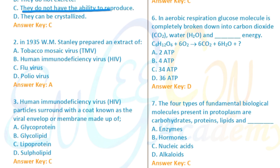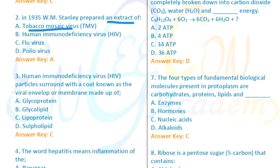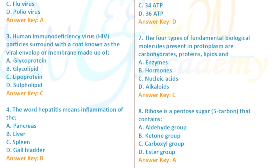Question 4: In 1935, if prepared as an extract — whether it's the extract or chronological — TMV (Tobacco Mosaic Virus) story extract. Question 5: HIV (Human Immunodeficiency Virus) is a virus particle surrounded by a coat known as an envelope, and it belongs to the retrovirus category.